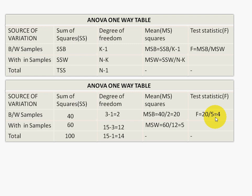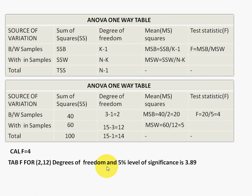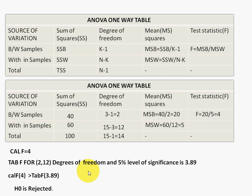To find the tabulated F value, we use numerator df=2 and denominator df=12. At the 5% level of significance, the tabulated F for (2, 12) degrees of freedom is 3.89. Since the calculated F=4 is greater than the tabulated F=3.89, we reject H0. This means the population means are not equal. This concludes the ANOVA one-way problem based on one factor. Thank you.